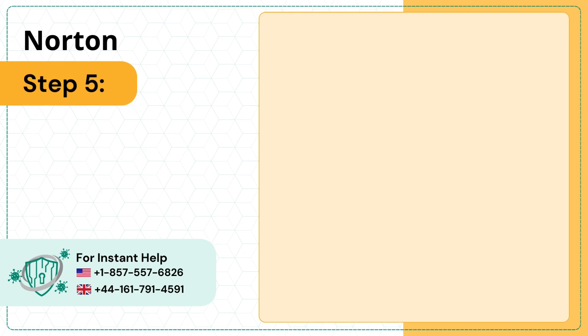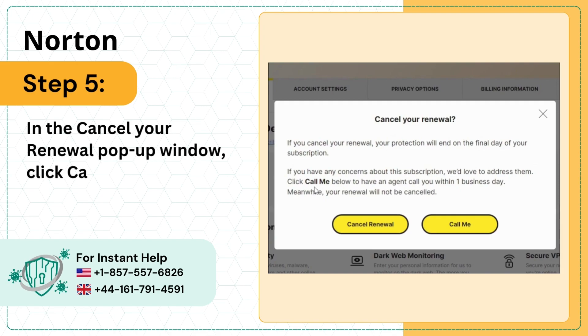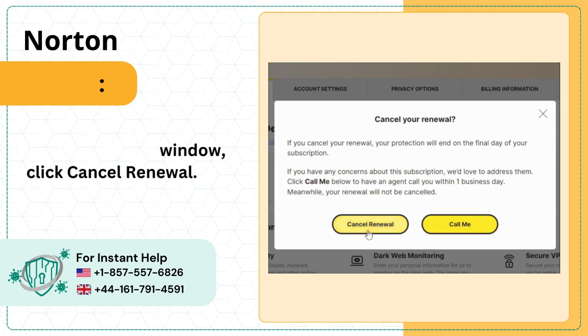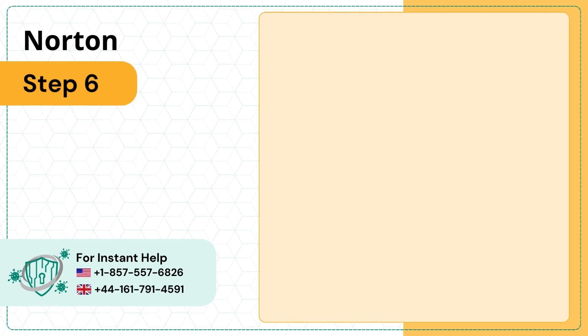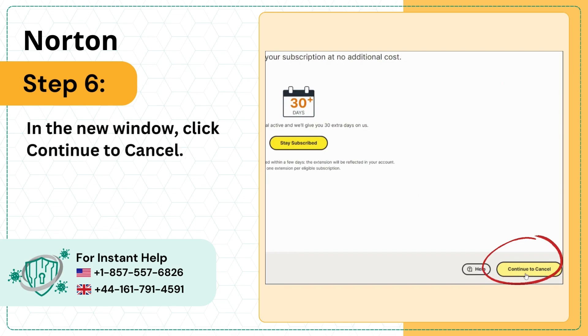Step 5: In the Cancel Your Renewal pop-up window, click Cancel Renewal. Step 6: In the new window, click Continue to Cancel.